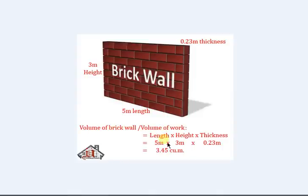Therefore, total volume of brick wall is equal to 5 meters multiply by 3 meters multiply by 0.23 meters, which comes to be 3.45 cubic meters.